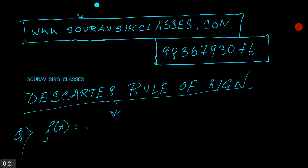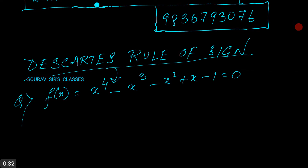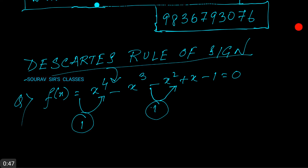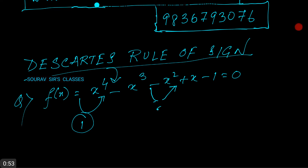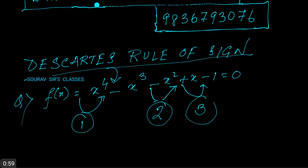We have f(x) = x⁴ - x³ - x² + x - 1 = 0. So there are three variations in f(x). This is variation number 1, this is variation number 2, and from plus to minus again we have variation number 3.